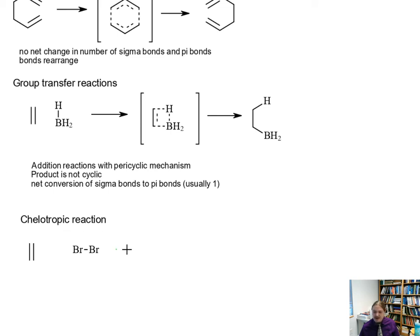We already know that this is a reaction that produces these cyclic three-membered ring bromonium ions. So it's like a cycloaddition, but the mechanism is considerably more complicated. Let me finish drawing it.